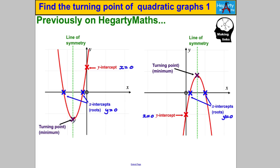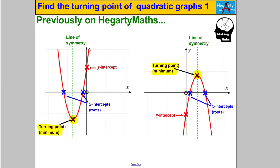One thing we know for sure is that the x-coordinate of the turning point is shared with the x-value on the line of symmetry. If we can find that x-value, we can substitute it back into the original equation of the curve or parabola and find the matching y-value. That's exactly what we're going to do — find the coordinates of these turning points. Let's get straight into an example.